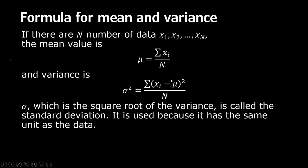Sometimes when you subtract you get a negative and sometimes positive, and if you add them up they cancel — so that's no good. That's why you take the square. There is another approach where you take the absolute value, called the mean absolute value or something, but that's less used because it's hard to do mathematical analysis with it. The purpose of squaring is to make everything positive so they don't cancel, and then you divide by the total number of things.